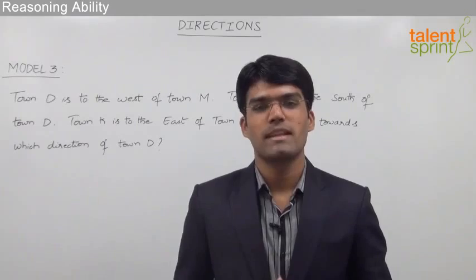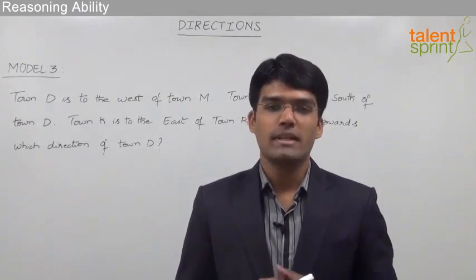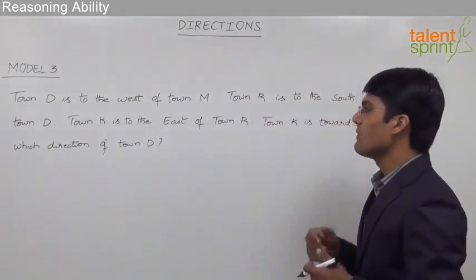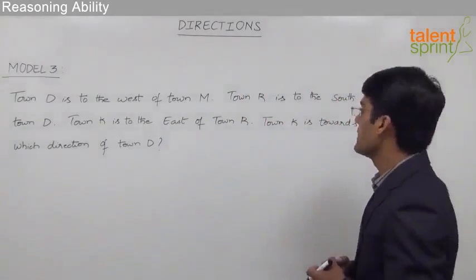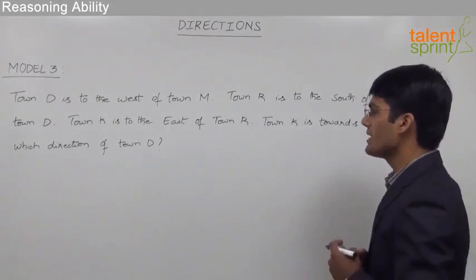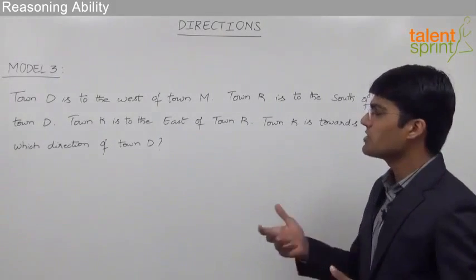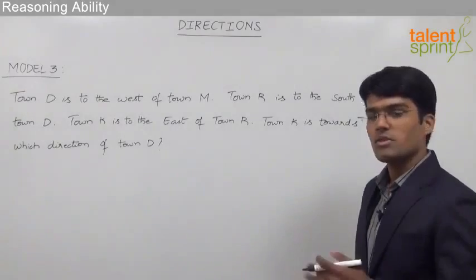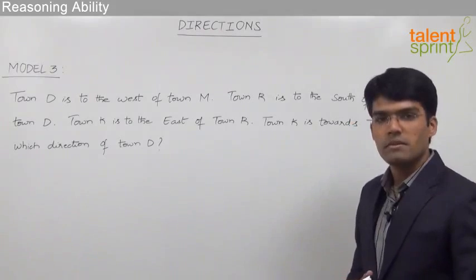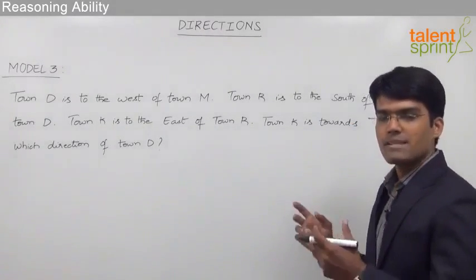Let us now take the third model from directions, which is based on finding out the direction between two particular towns. The question here is: town D is to the west of town M, town R is to the south of town D, town K is to the east of town R. Town K is towards which direction of town D? So we need to find out town K is towards which direction of town D based on the given information. Let us mark the positions of these towns as per the given directions.